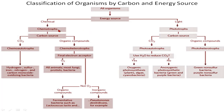Chemotrophs and phototrophs can be further divided into two subtypes based on the carbon source. If the carbon source is CO₂, chemotrophs are known as chemoautotrophs; if the carbon source is organic compounds, they are known as chemoheterotrophs. Similarly, for phototrophs, if the carbon source is CO₂ they are known as photoautotrophs.